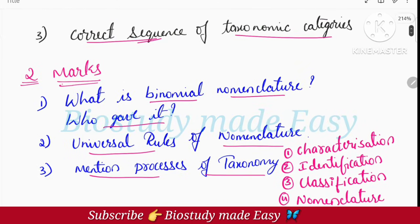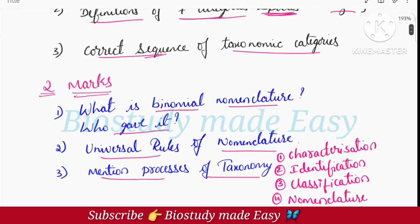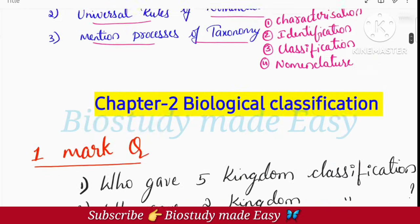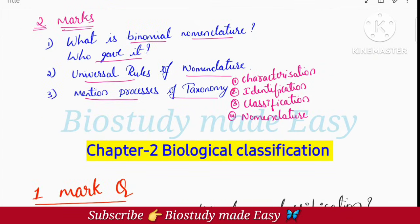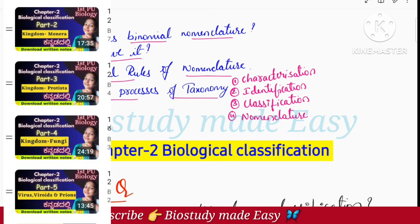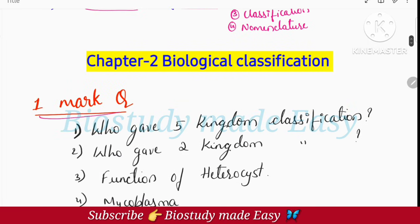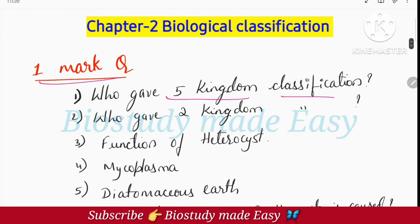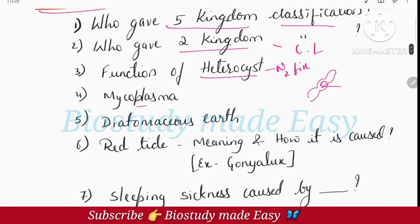Characterization, identification, classification, and fourth one is nomenclature. So it is 4 processes in taxonomy. This is for 2 marks questions. Next, biological classification, the second chapter. Complete chapter is available in the channel. One mark questions: Who gave 5 kingdom classification? R.H. Whittaker. Who gave 2 kingdom classification? Function of heterocyst - so heterocyst does nitrogen fixation. Mycoplasma - it is the smallest living cell.